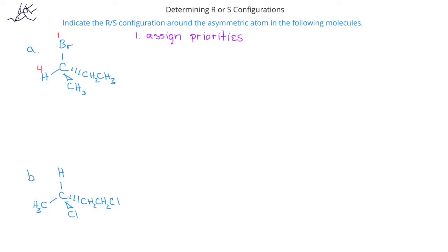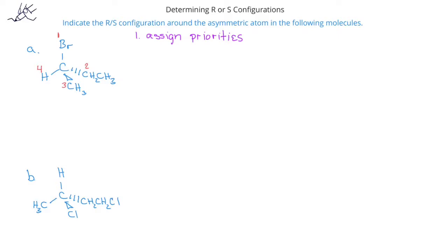Of the other two groups, we have a methyl and an ethyl. This carbon has three hydrogens, whereas this carbon has two hydrogens and another carbon. The presence of this second carbon, instead of a third hydrogen, means that the ethyl is the second highest priority. Now that we've assigned priorities, we can see if the lowest priority, in this case the hydrogen, is pointed away from us.